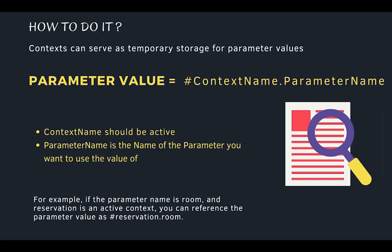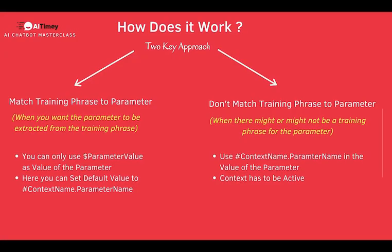In this intent where you're using the parameter value, you don't need to have an input context. A context becomes active if it was set as an output context in a previous intent and you are still within its lifespan. You can just have an output context in the previous intent and keep this intent within the lifespan of that context, and it will be possible for you to use hashtag context_name dot parameter_name.